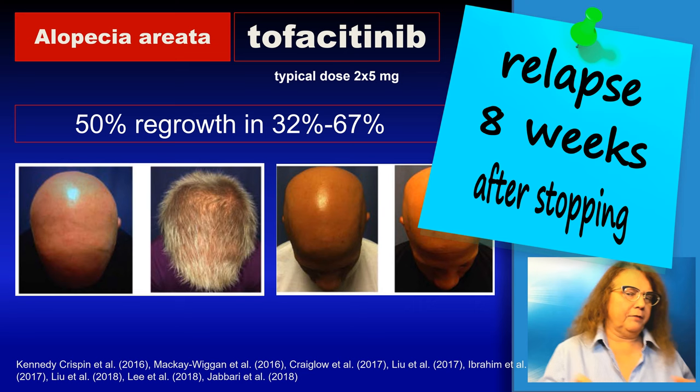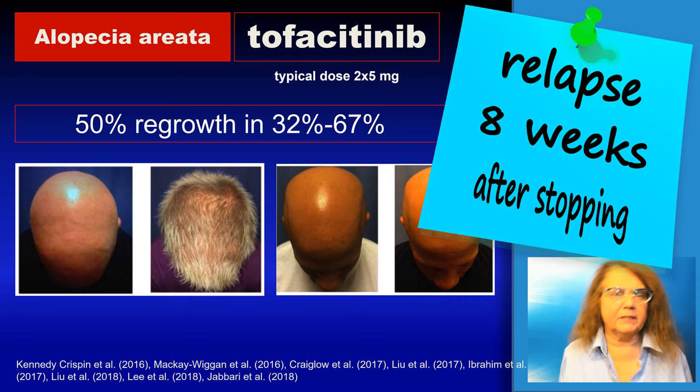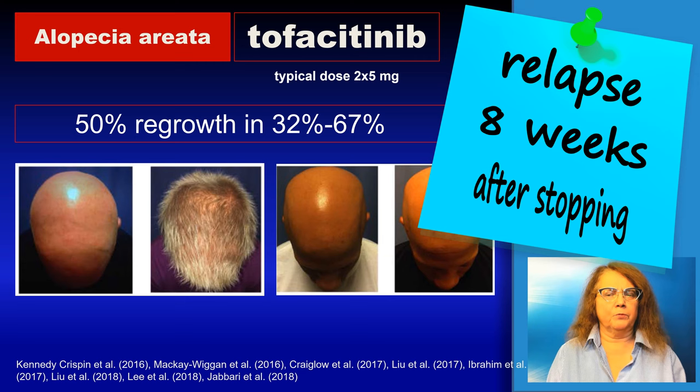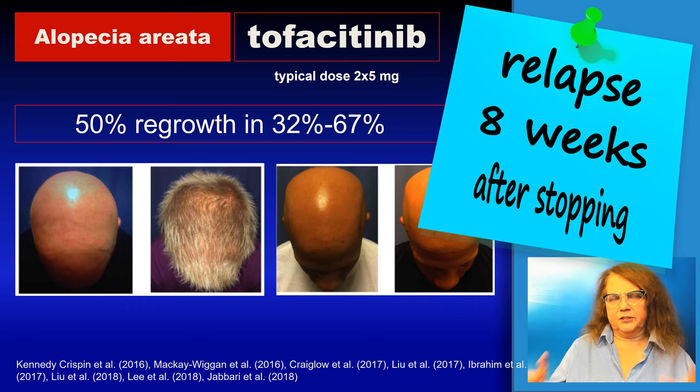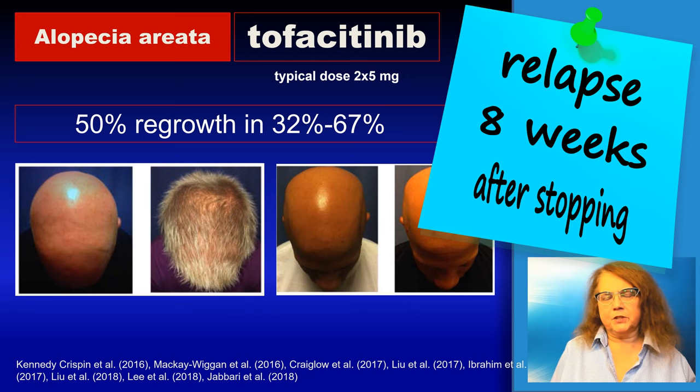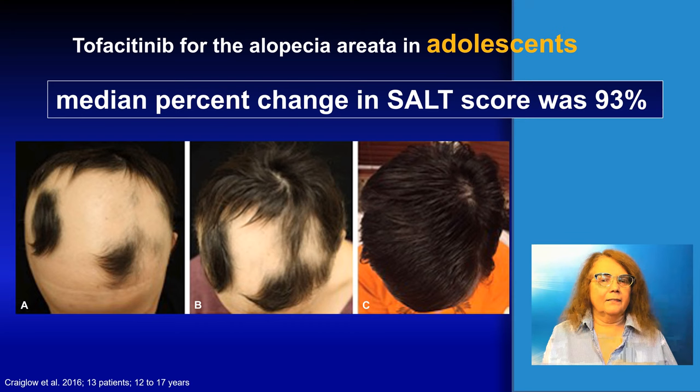What has drawn attention to tofacitinib in alopecia areata is that if you discontinue treatment, there is a relapse approximately 80 weeks after stopping. However, we have to keep in mind that alopecia areata is a chronic autoimmune disease. I think further investigation should go into finding the best maintenance treatment in patients who have achieved regrowth after a course of treatment with a JAK inhibitor.